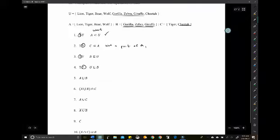A union B. So combining Lion, Tiger, Bear, Wolf with Gorilla, Zebra, Giraffe. We're just adding the two sets there. You can skip some steps if you'd like, but we're writing down Lion, and feel free to abbreviate, Tiger, Bear, Wolf, Gorilla, Zebra, and Giraffe.